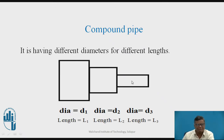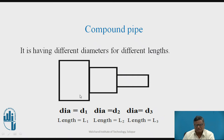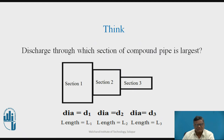Now let us see what is meant by a compound pipe. In case of the compound pipe, we have different pipes joined to each other end to end, and their diameters are varying. The first part has diameter D1 and length L1. Then the diameter reduces and the second pipe has diameter D2 and length L2. Then one more section is joined with diameter D3 and length L3. So in the compound pipe, the diameters of the pipes are different: D1, D2, and D3.